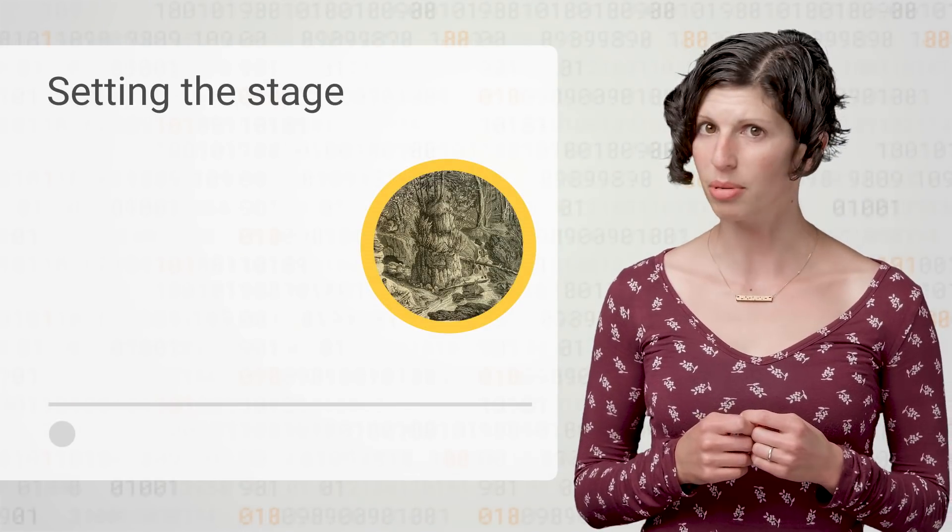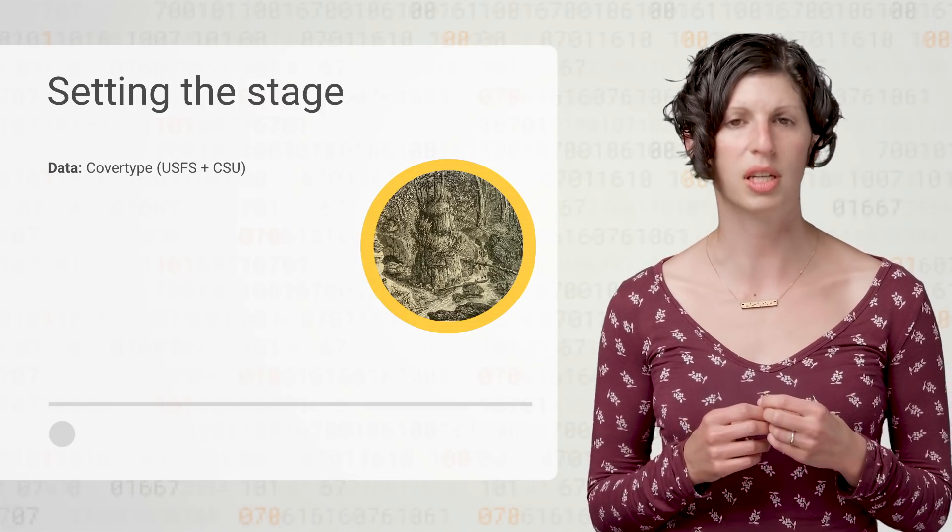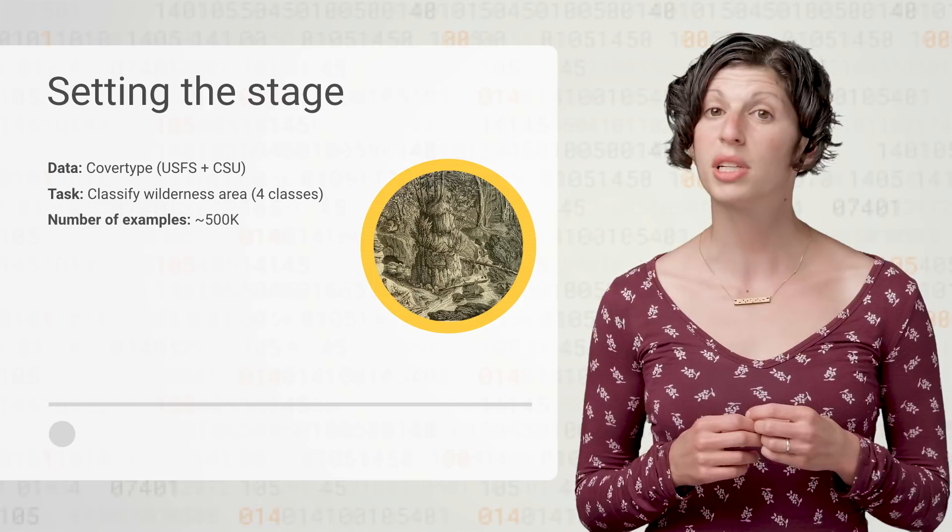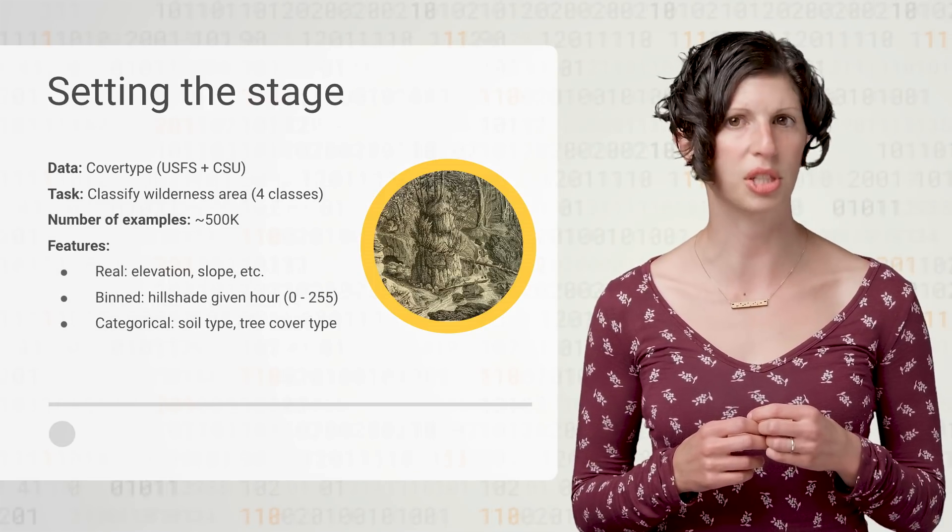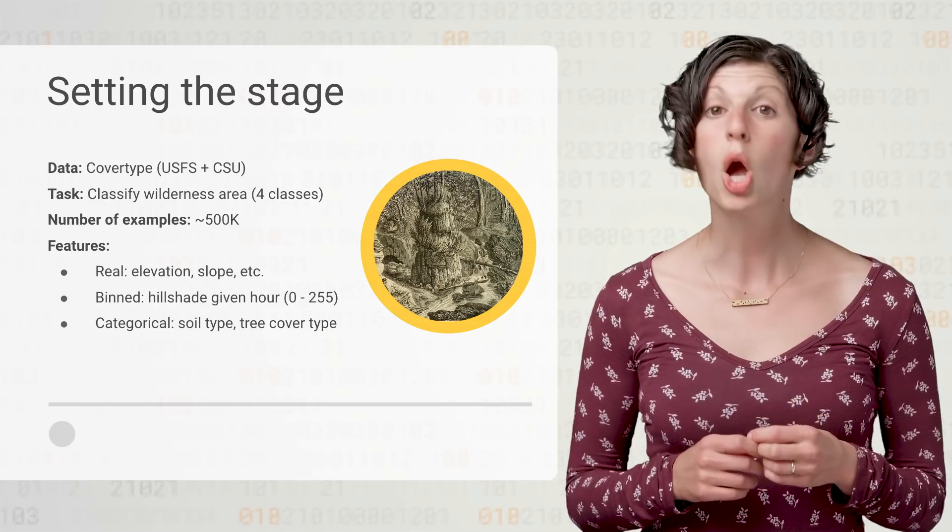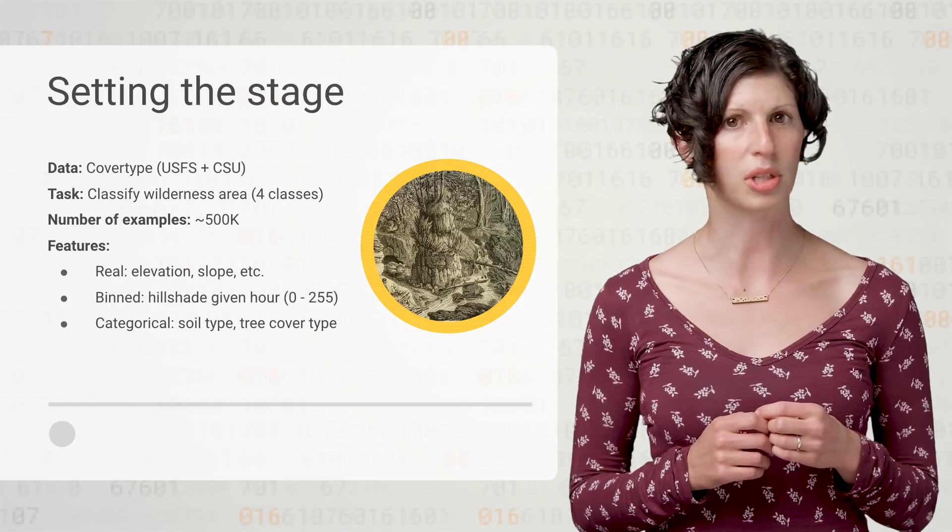We start with a problem, an associated data set. We will use the cover type data set from the US Forestry Service and Colorado State University, which has about 500,000 rows of geophysical data collected from particular regions in national forest areas. We are going to use the features in this data set to try to predict the soil type that was found in each region.